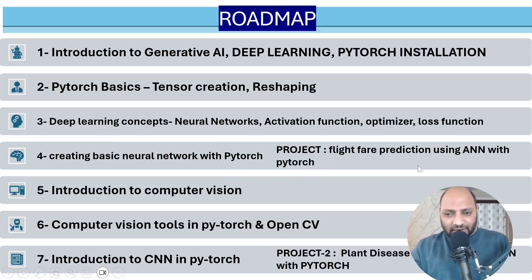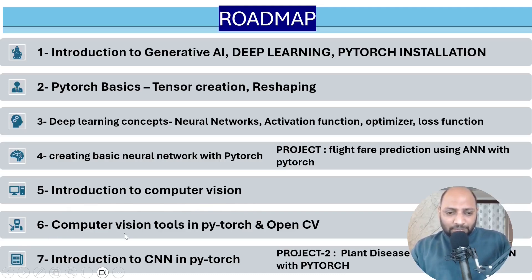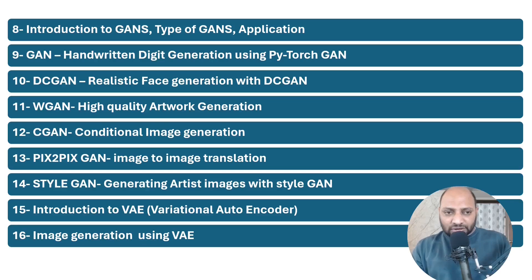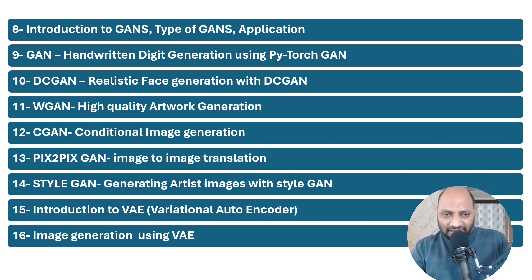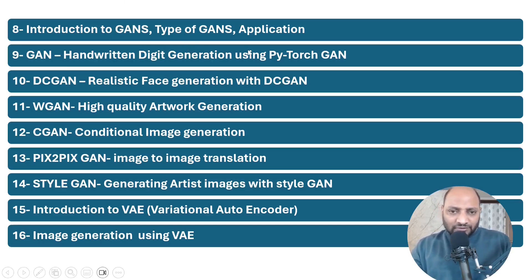The fourth topic is creating a basic neural network with PyTorch, plus a project: flight fare prediction using ANN with PyTorch. Fifth: since we work with images, you must learn computer vision — introduction to computer vision. Sixth: computer vision tools in PyTorch and OpenCV. Seventh: introduction to CNN in PyTorch, and Project Two — plant disease detection using CNN with PyTorch. Once we cover PyTorch and computer vision, we build GANs, which are the generative AI models.